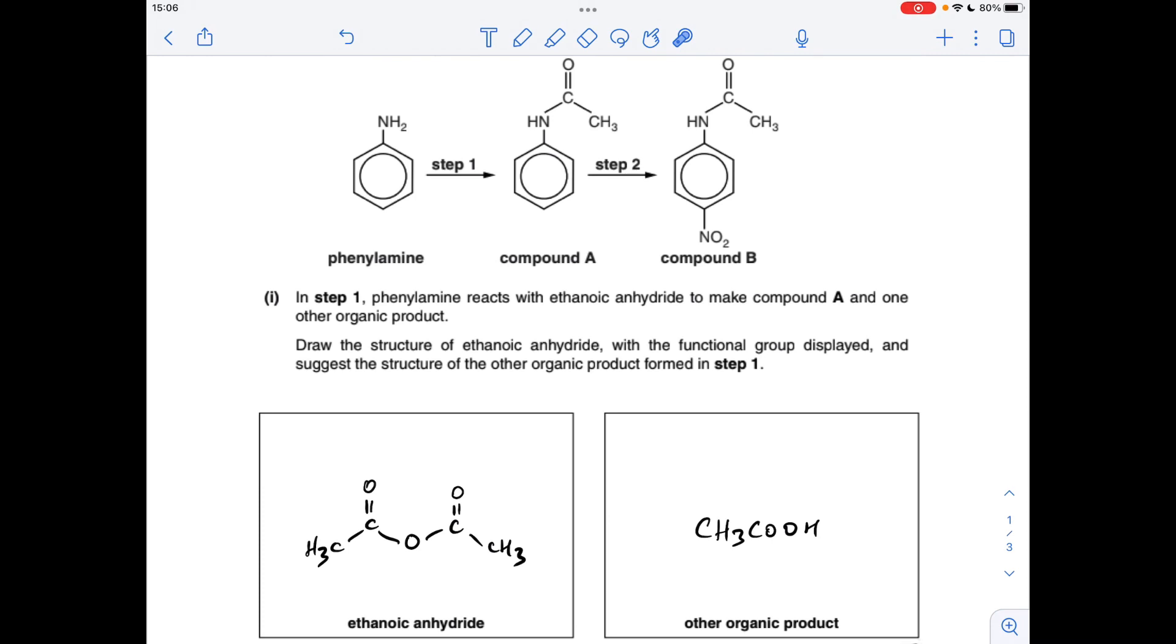Ethanoic anhydride, so it looks like that. The other organic product, well if we think about what's happening, we've lost a hydrogen to put this group on here, so that hydrogen is going to react with or combine with the remainder of the ethanoic anhydride.